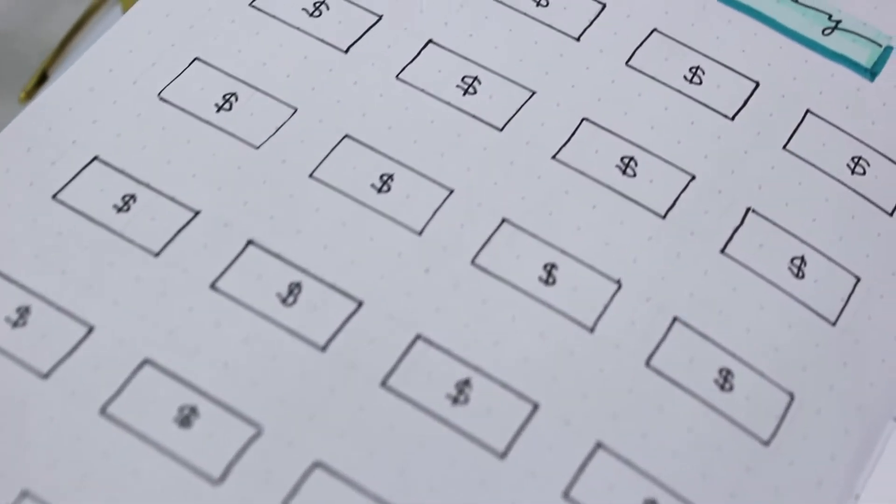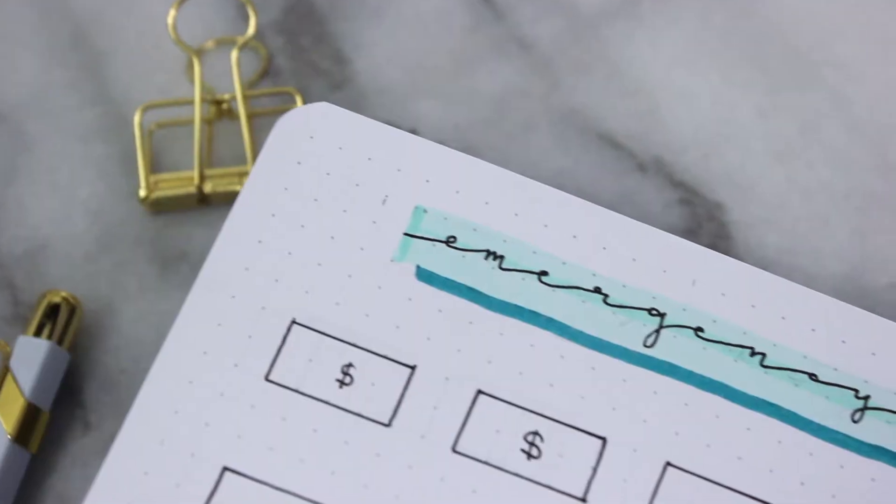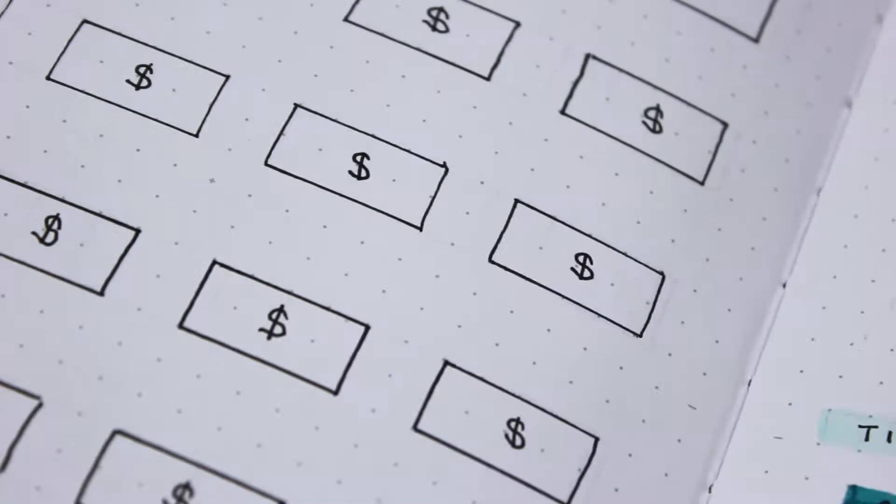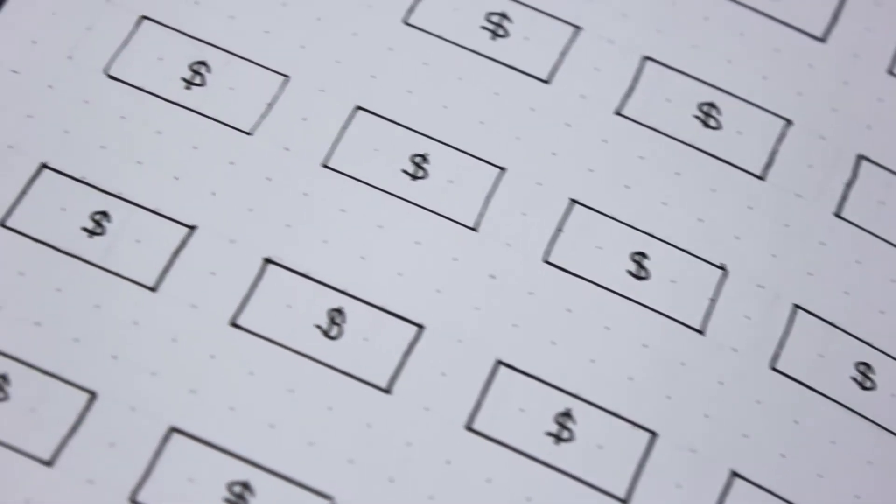Once an amount is saved, you just color it in and it shows you a visual representation of exactly how much money you have saved away for your emergencies.